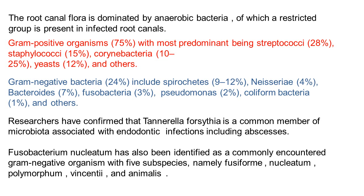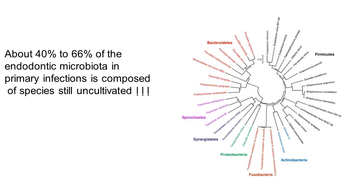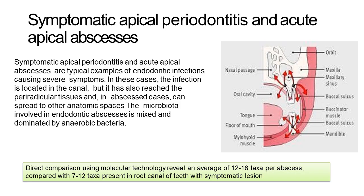Fusobacterium has also been identified as the most common gram-negative organism, with species such as F. nucleatum, F. polymorphum, and others. Even with all these bacteria, 40 to 66% of endodontic microorganisms in a primary infection have not been cultivated yet.